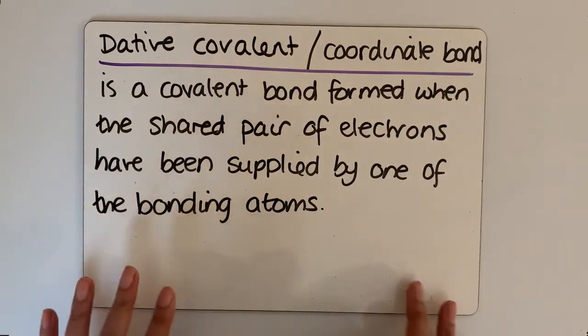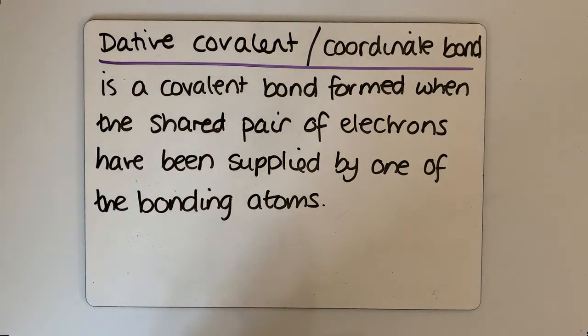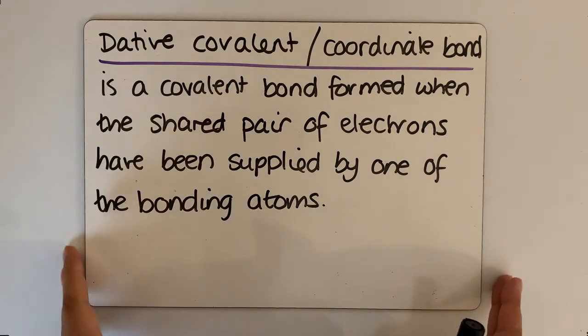Let's now move on to another type of covalent bond — the dative covalent bond, also called a coordinate bond. It's a covalent bond formed when the shared pair of electrons has been supplied by just one of the bonding atoms, rather than each atom sharing one electron each.